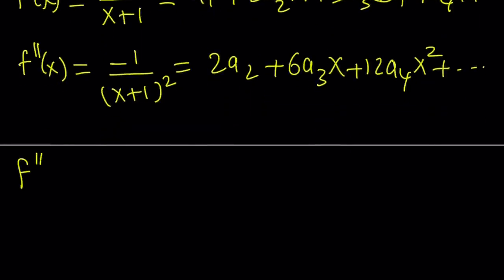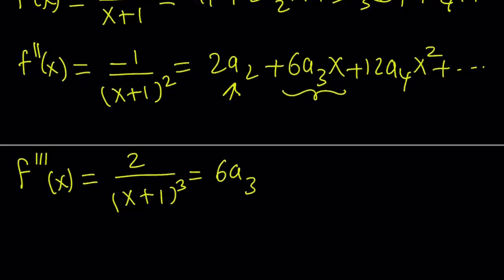Now the third derivative, f triple prime. The derivative of this function is 2 over (x+1)³. You can generalize this to the nth derivative by using n factorial in the numerator. And you have to have a factor like (-1)^(n+1) so that the signs can alternate. The derivative of this constant is 0. The derivative of this is 6a₃. Then we get 24a₄x. Notice that the 6 comes from 3 times 2. The 24 comes from 4 times 3 times 2. It's kind of like factorials.